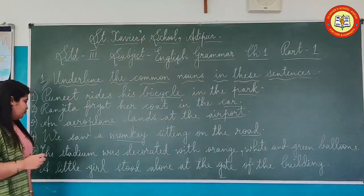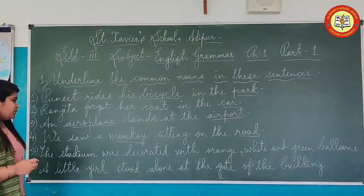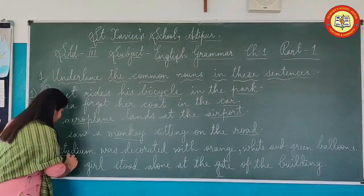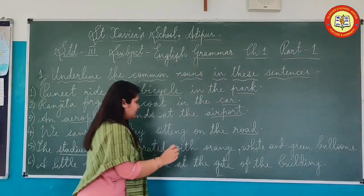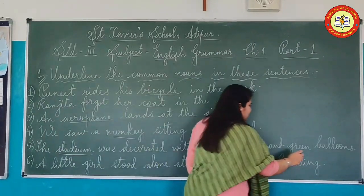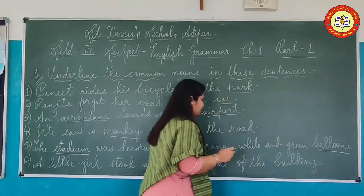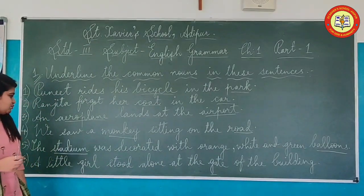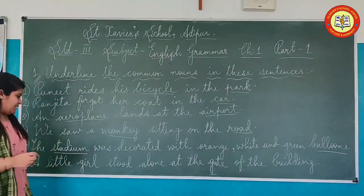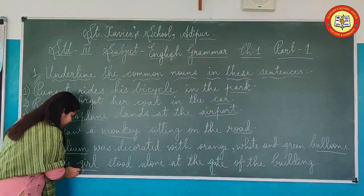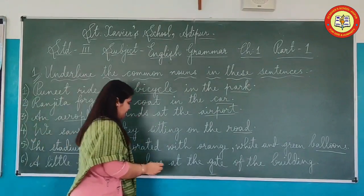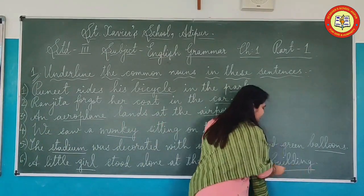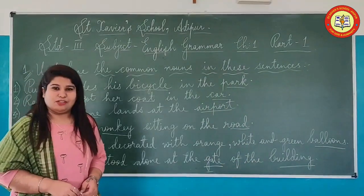Fifth sentence: 'The stadium was decorated with orange, white and green balloons.' First of all, stadium — that would be the common noun. And lastly, balloons. Last one: 'A little girl stood alone at the gate of the building.' First of all, girl will come as common noun. Then gate, and then building.